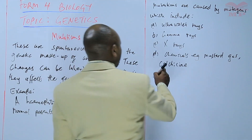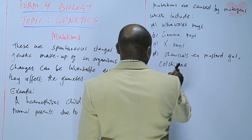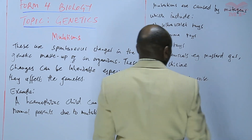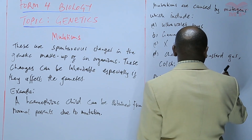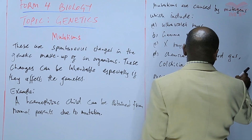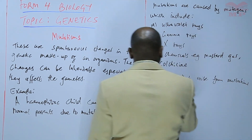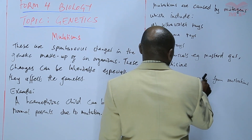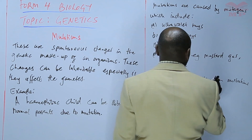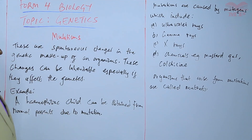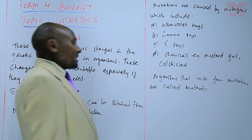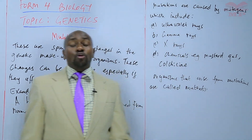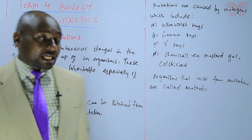Organisms that arise from mutations are called mutants. Mutants are products of mutations — they are organisms that have arisen from mutations, or that have come up as a result of mutations having taken place.